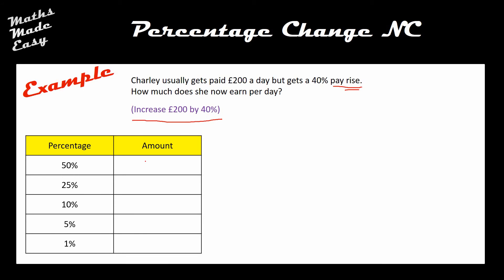To find 50%, take the original amount and divide by 2 — so 50% is £100. For 25%, take the 50% value and halve it — so 25% is £50. For 10%, take the original amount £200 and divide by 10 — so 10% is £20. For 5%, take the 10% value and halve it — so 5% is £10. For 1%, take the 10% value of £20 and divide by 10 — so 1% is £2.